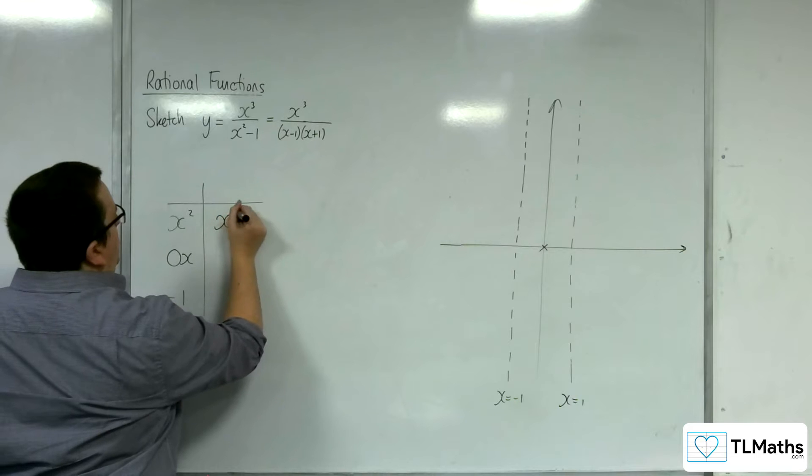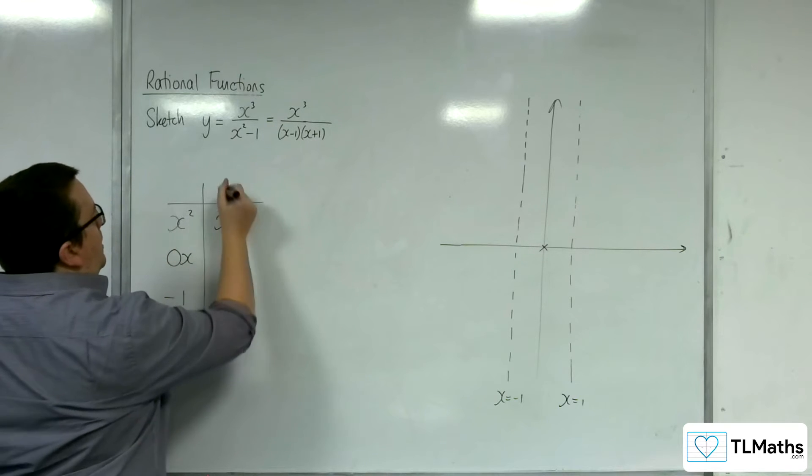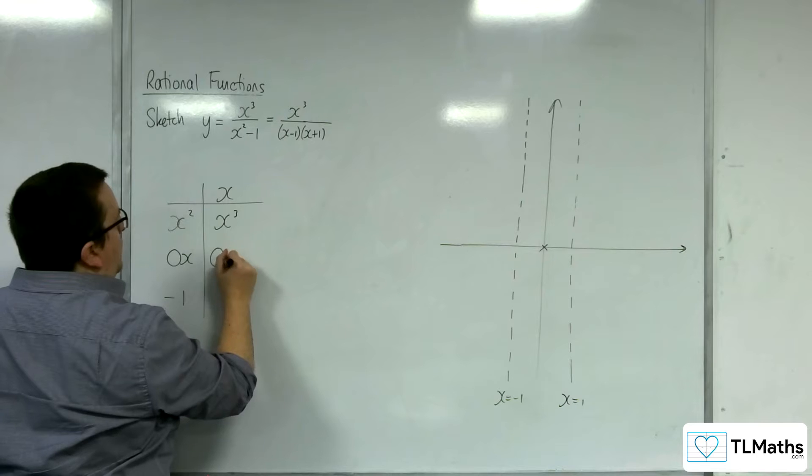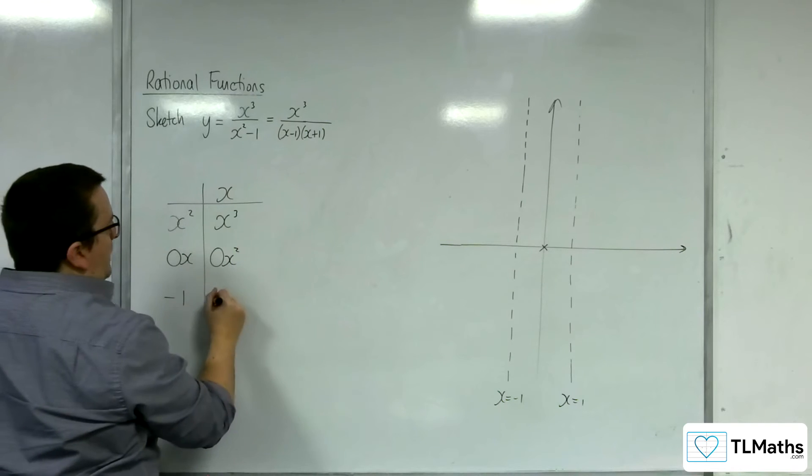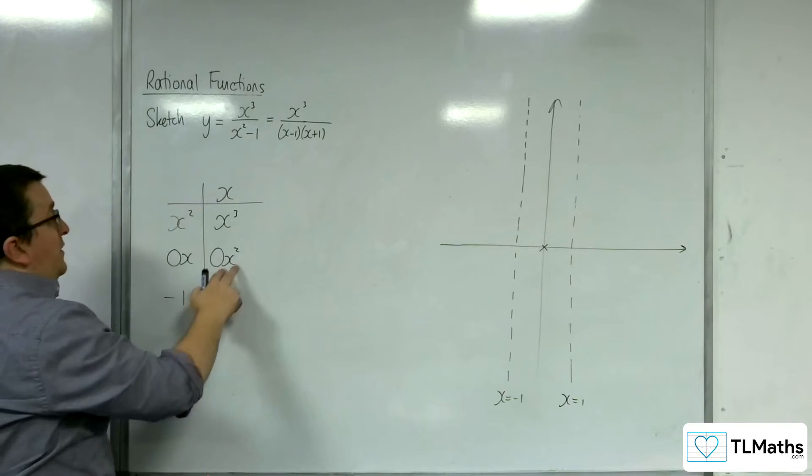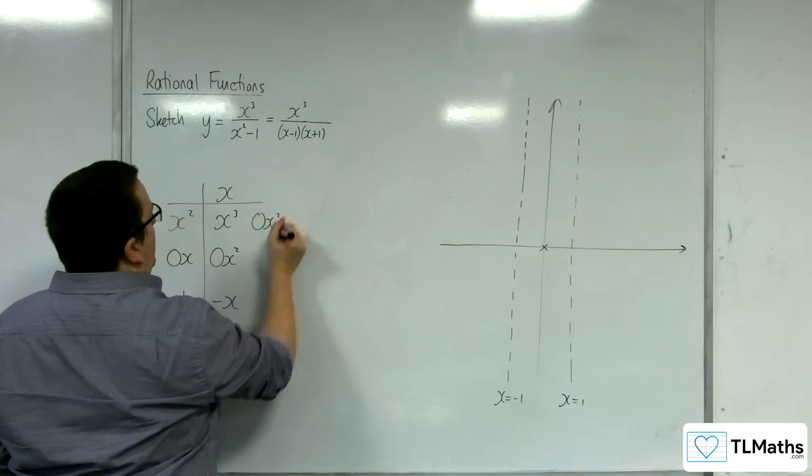So I want x³. x² into x³ goes x times. x times 0x is 0x². x times -1 is -x.